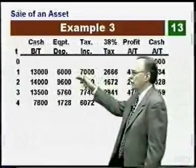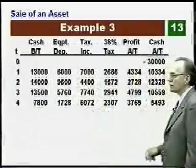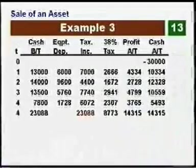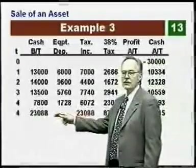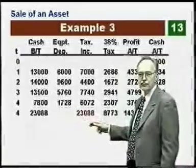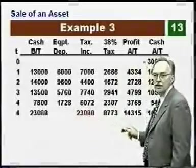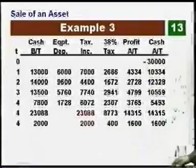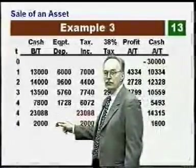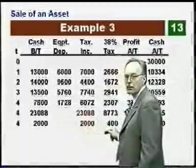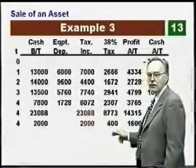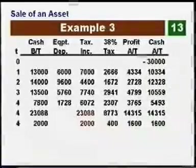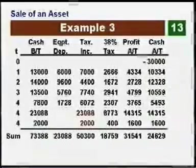Working through the table: depreciation is the same as before, and those columns are identical to the previous example. Now we have a large cash before tax from the depreciation recapture — $23,088 — which is all taxable at the normal rate of 38%, giving us profit after tax and cash flow after tax. We then have the additional portion of the sale — the $32,000 minus $30,000 — which is a capital gain taxed at the lower rate of 20% applied to this $2,000.